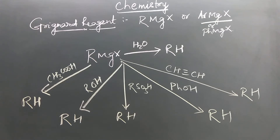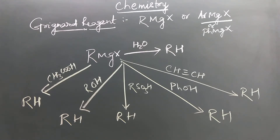Grignard reagent is alkyl magnesium halide or aryl magnesium halide. It is an organometallic compound, meaning it has a carbon-metal bond. Its formula is RMgX or ArMgX.